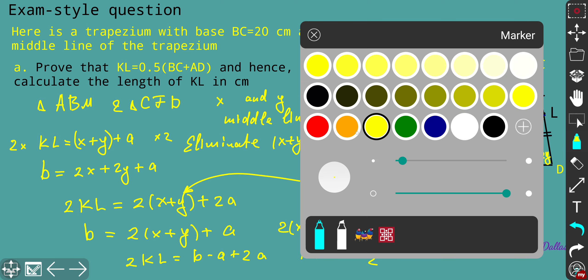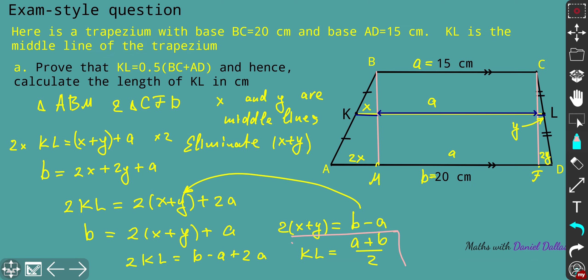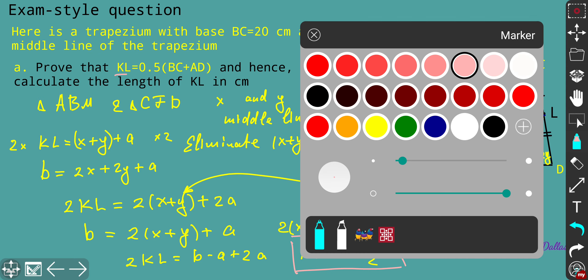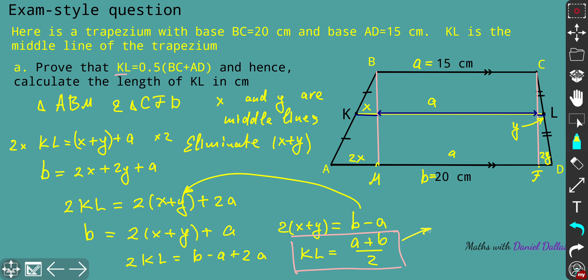Let's have a look at what we've got. We got the equation for KL. Let's compare what we're supposed to do: KL is 0.5, that's one over two, BC is the top one which is a, and AD is b, the bottom one. We have everything in order to calculate the length for KL. KL in centimeters is going to be equal to (15 + 20) over 2, which will give us the value 35 over 2, which is 17.5 centimeters.